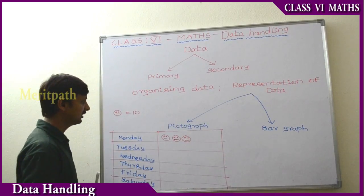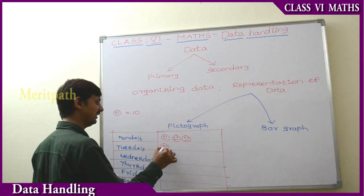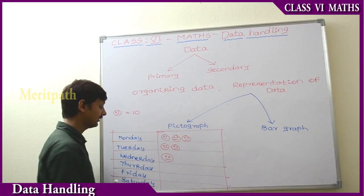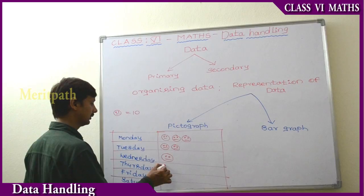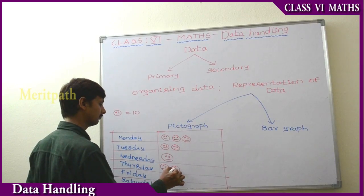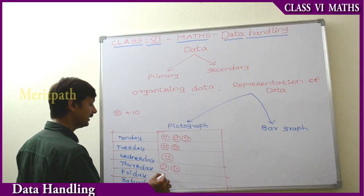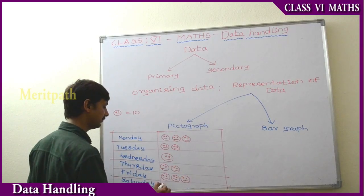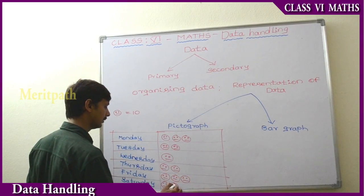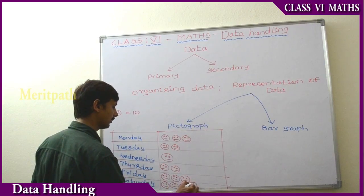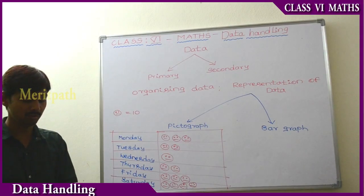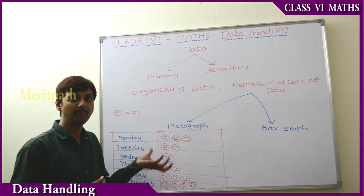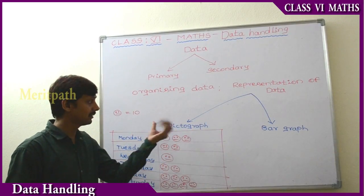On Tuesday, 20 students are absent. On Wednesday, there are 10 students absent. On Thursday, 20 students are absent. On Friday, 30 students are absent. On Saturday, 40 students are absent at school. So this is the information we have collected, and we represent it as pictures. This information is known as a pictograph.